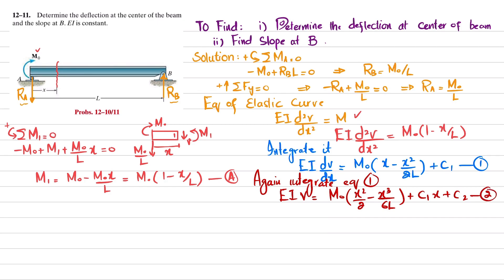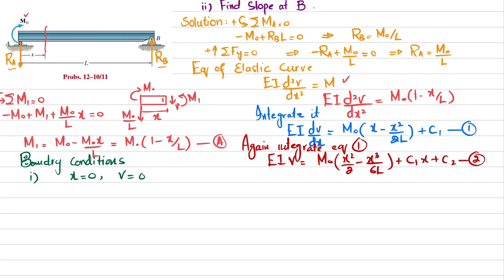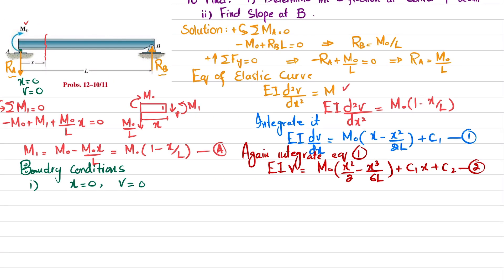Equations 1 and 2 contain unknown constants of integration C1 and C2, which we find using boundary conditions. The first boundary condition is that at x equals 0, deflection v equals 0, because there is a roller support at A. Substituting into equation 2: all terms become zero, so C2 equals 0.